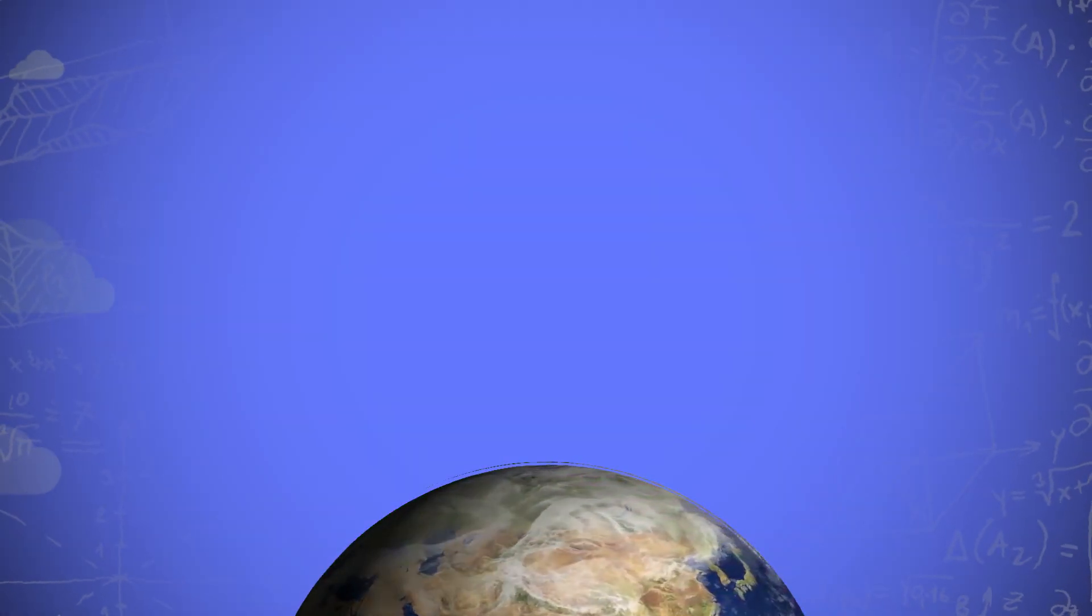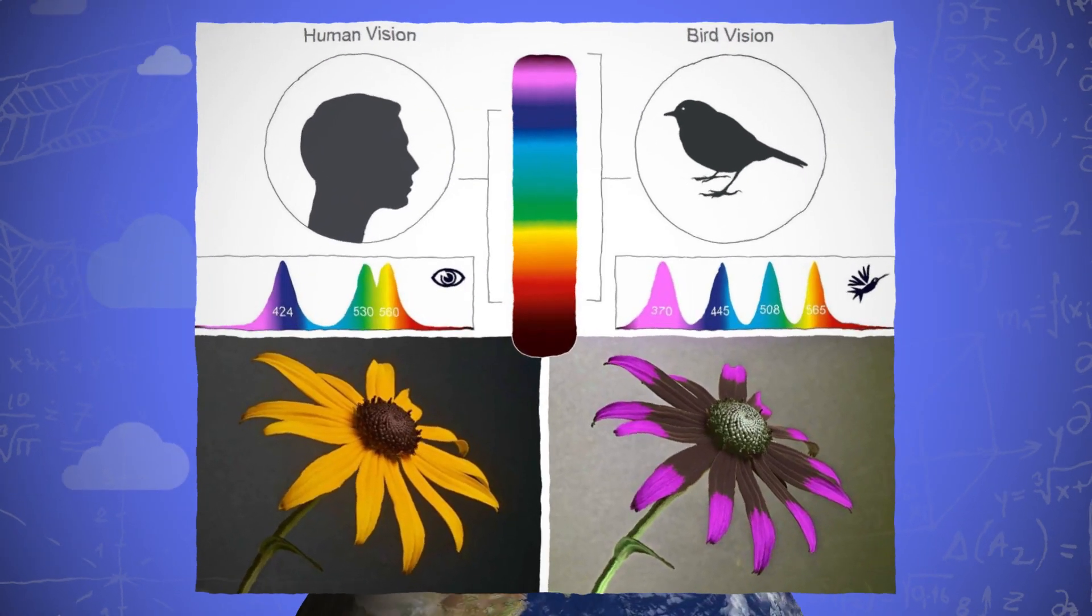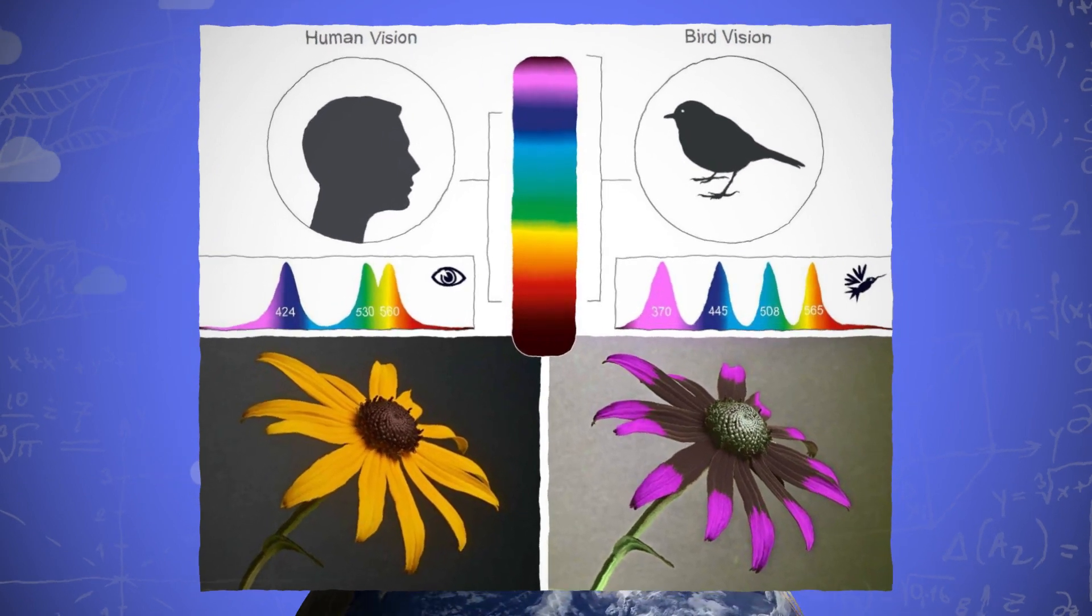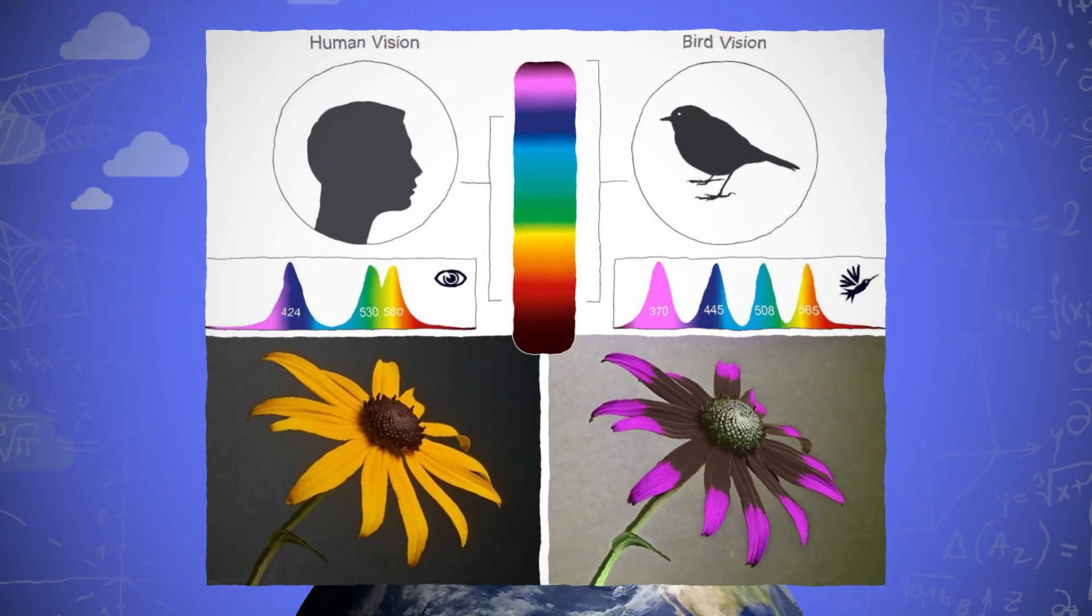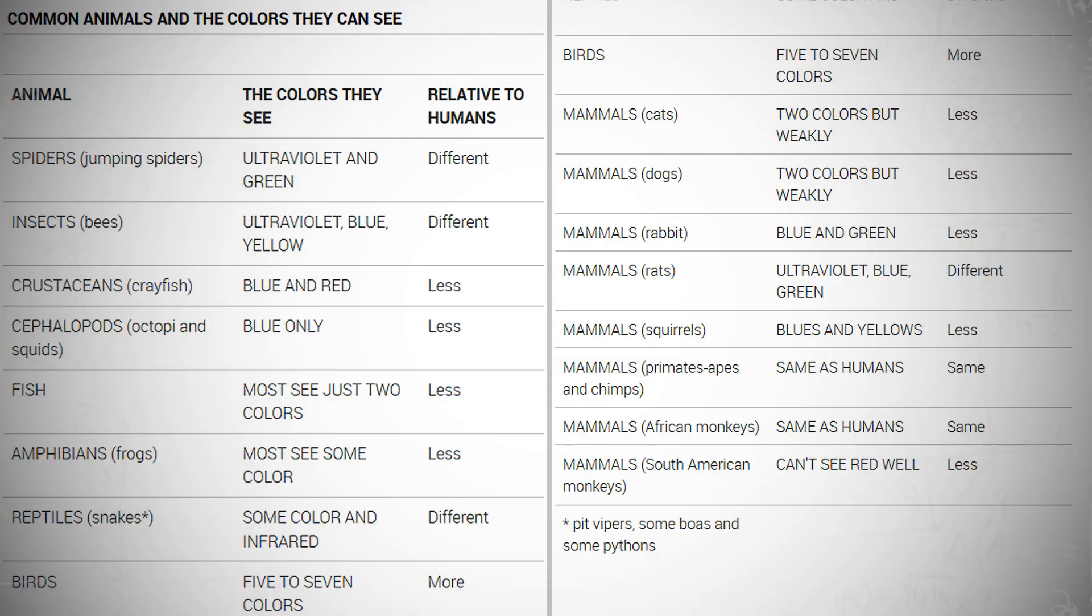This phenomenon can be different for other creatures. Animals, birds, or insects have different range of visible spectrum. They may see the sky as a completely different color. Here's a list of visible spectrum on some of the animals.